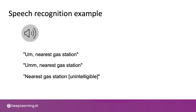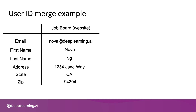Let's also look at an example of structured data. A common application in many large companies is user ID merge — that's when you have multiple data records that you think correspond to the same person, and you want to merge these user data records together. For example, say you run a website that offers online listings of jobs, and you have a data record from a registered user with their email, first name, last name, and address.